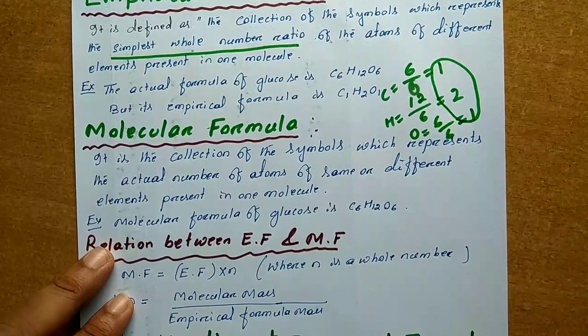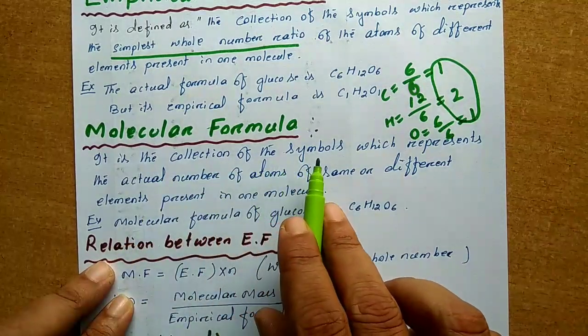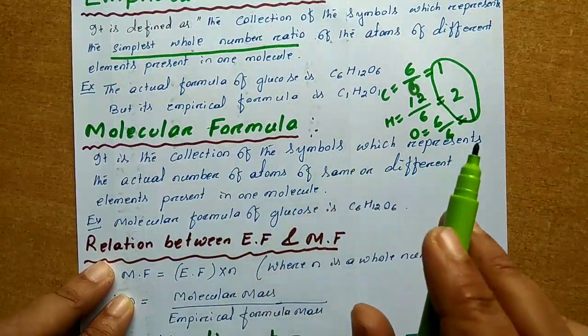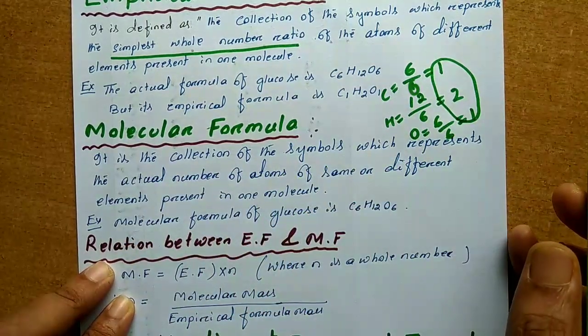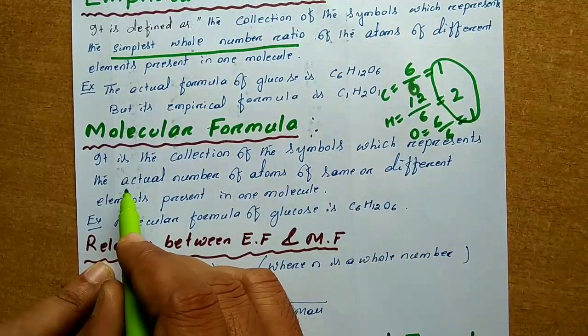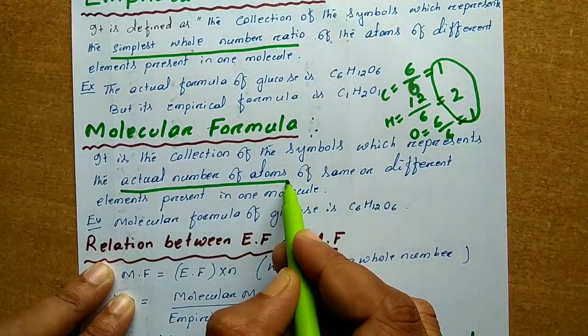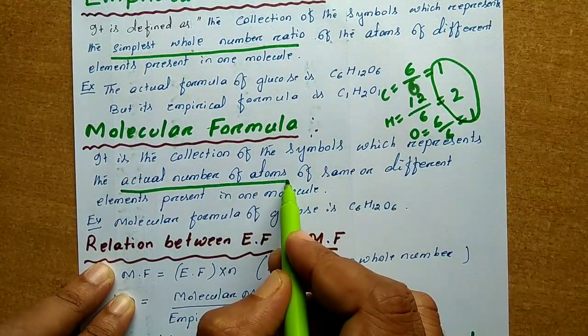Now, molecular formula. It is the collection of symbols which represents the actual number of atoms. This is very important — this is the actual number of atoms.